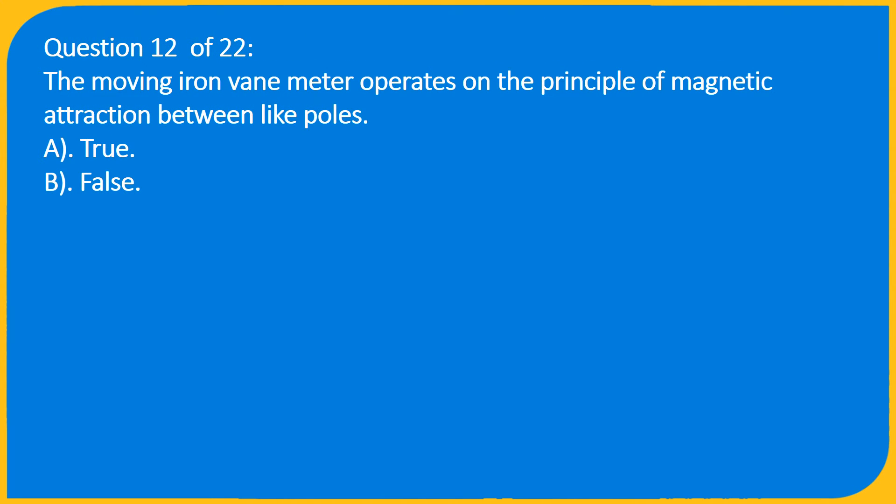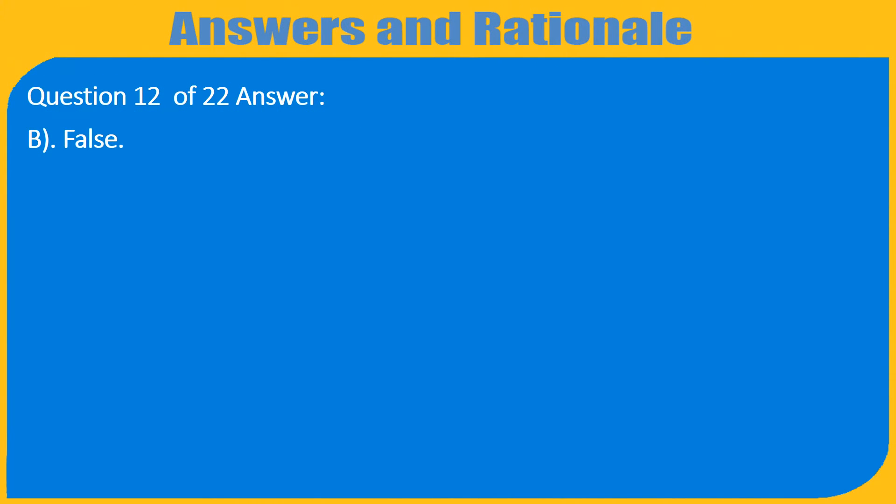Question 12 of 22: The moving iron vane meter operates on the principle of magnetic attraction between like poles. A. True, B. False. Answer: B. False.